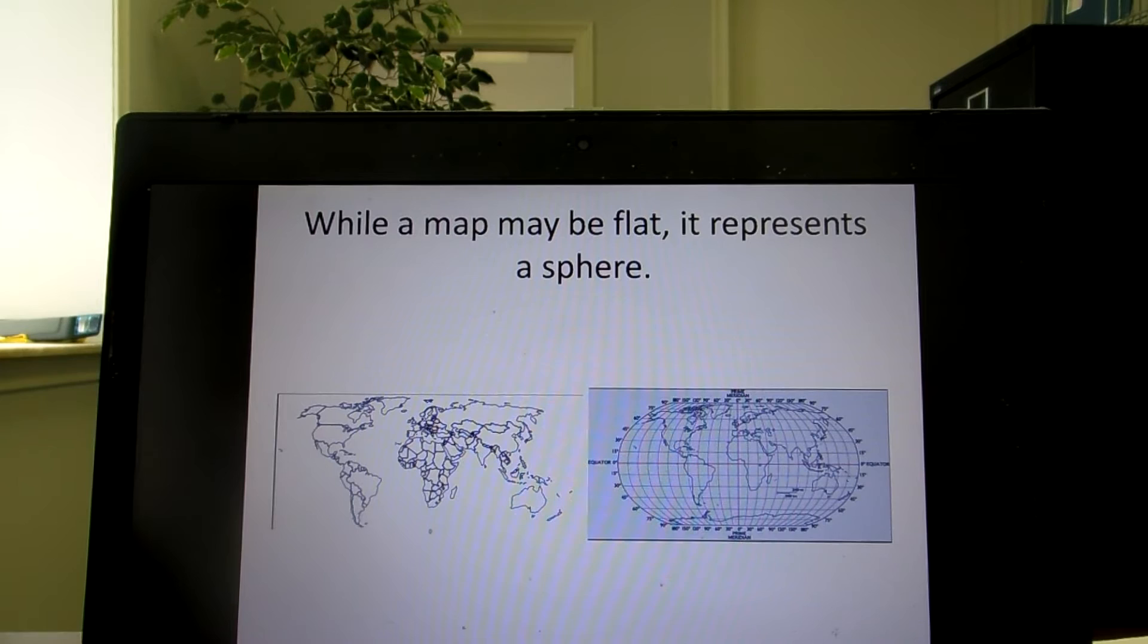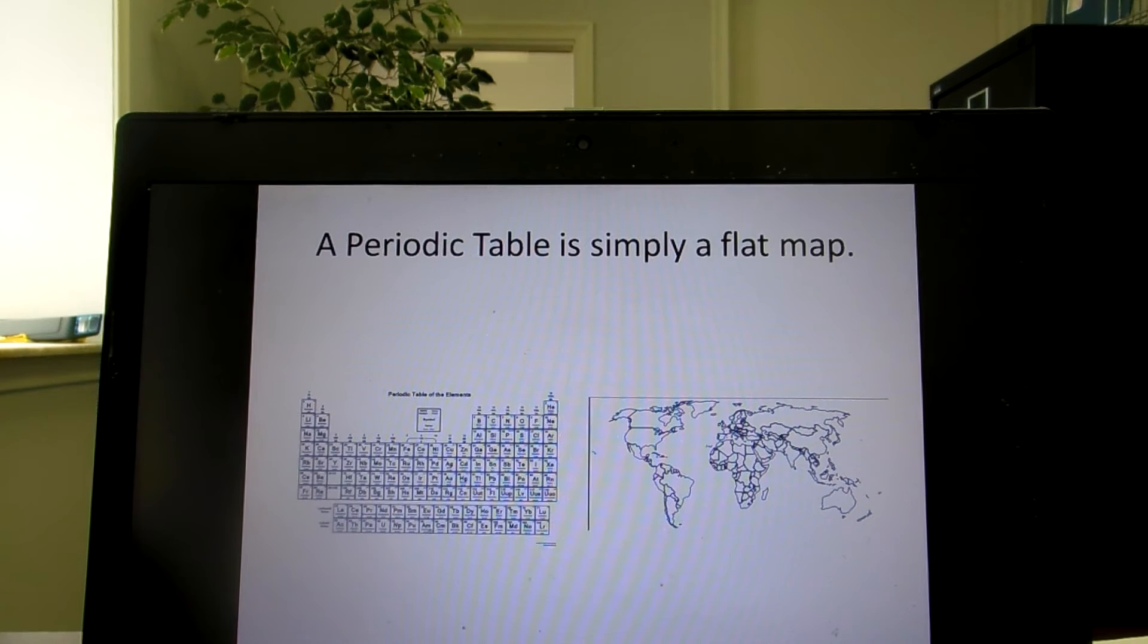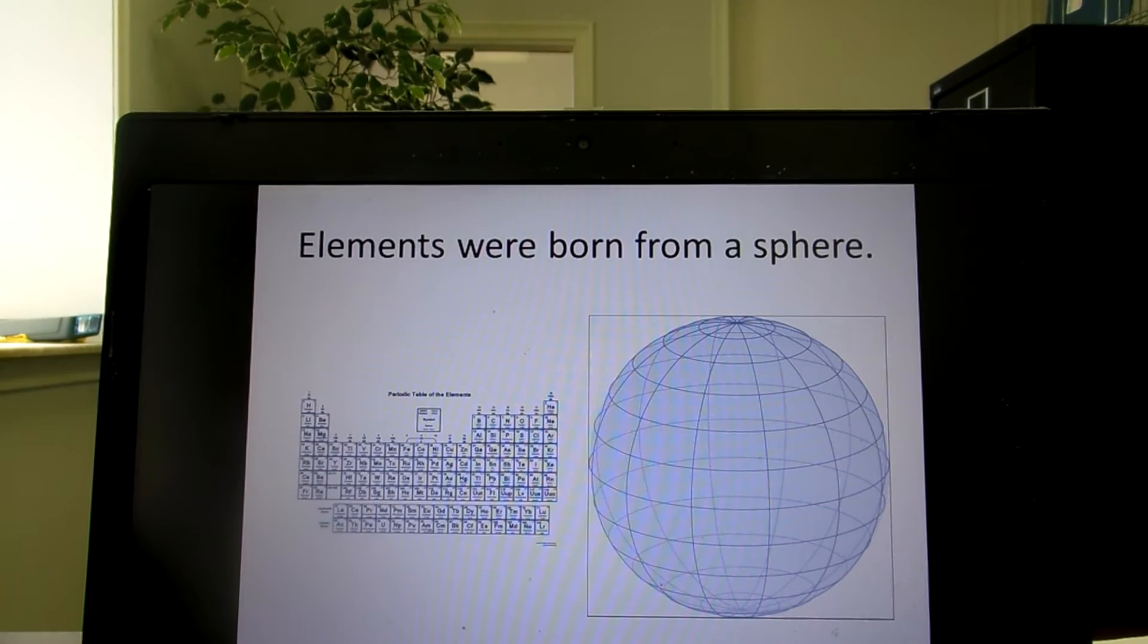We've all seen maps of the world, and while the map is 2D and flat, we know that what it actually represents is a sphere. I suggest that a periodic table is simply a flat map. I believe that the elements in a periodic table were born from a sphere.